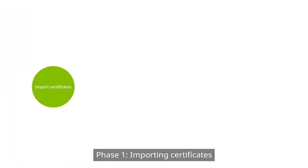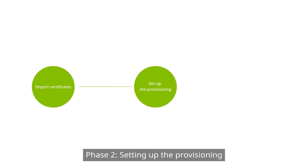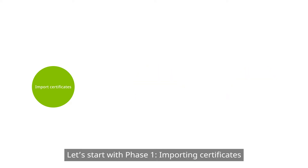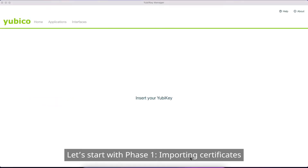We'll go through three phases: Phase 1, Importing Certificates; Phase 2, Setting up the Provisioning; and Phase 3, Testing the Authentication. Let's start with Phase 1, Importing Certificates.